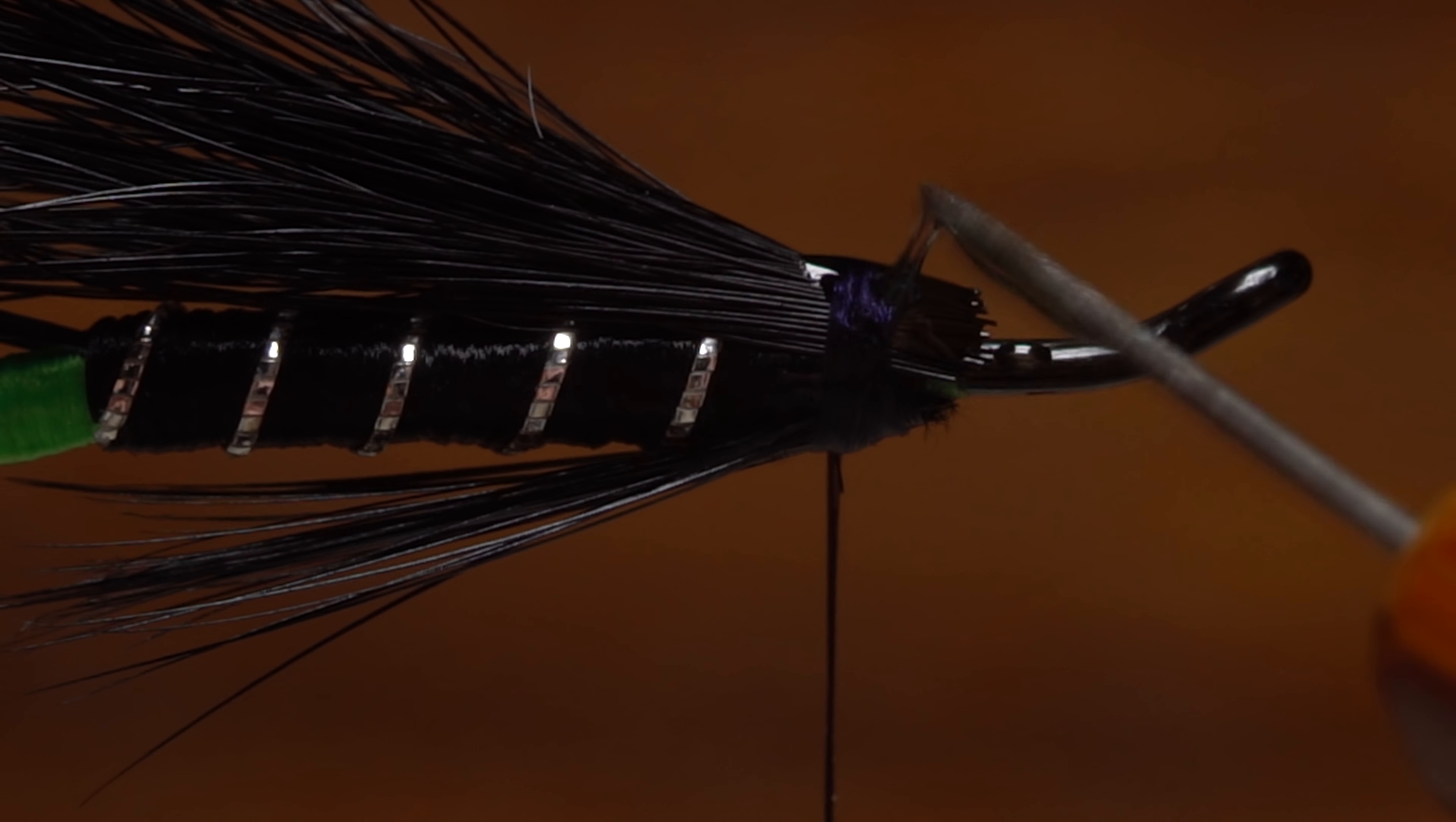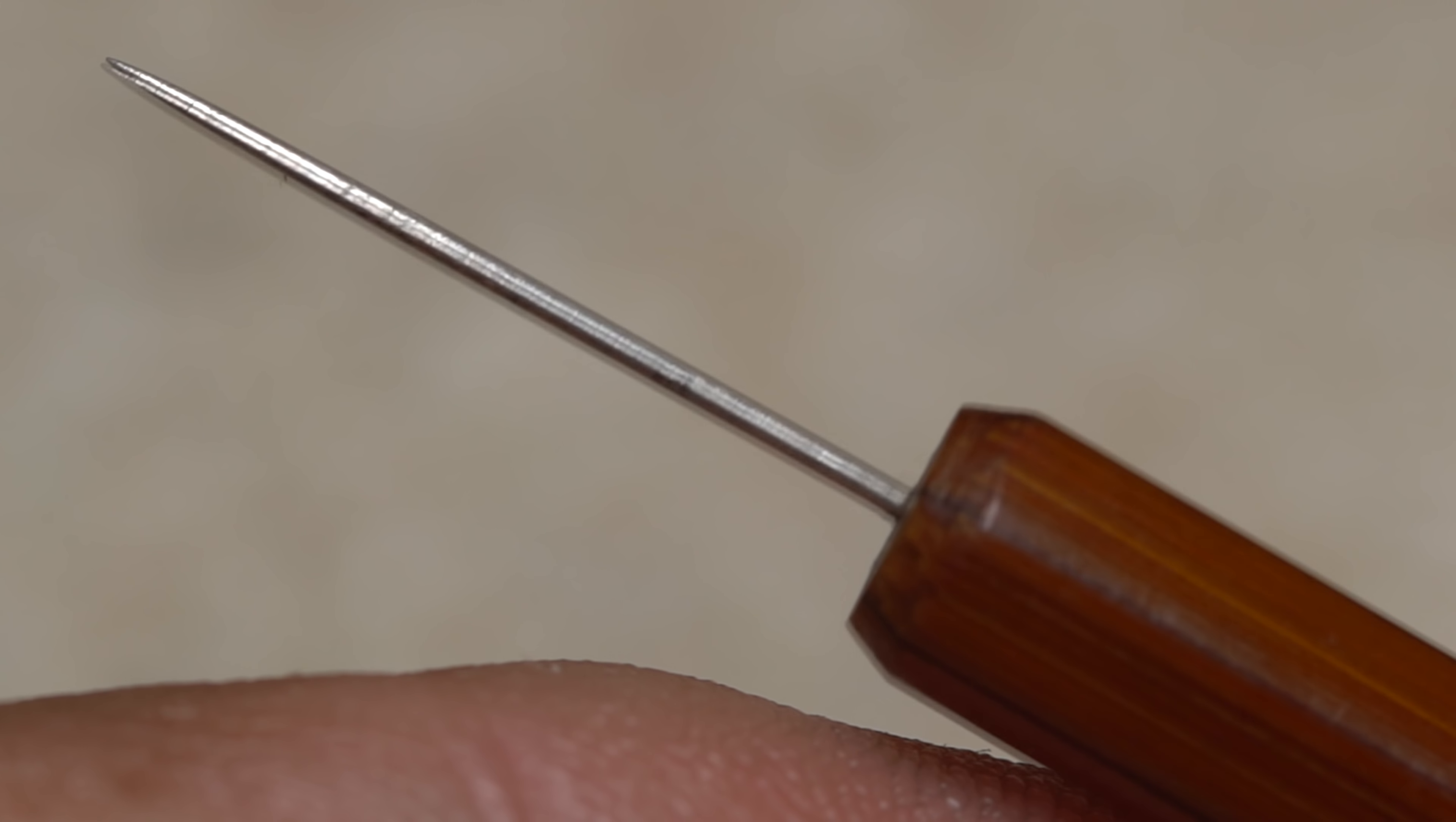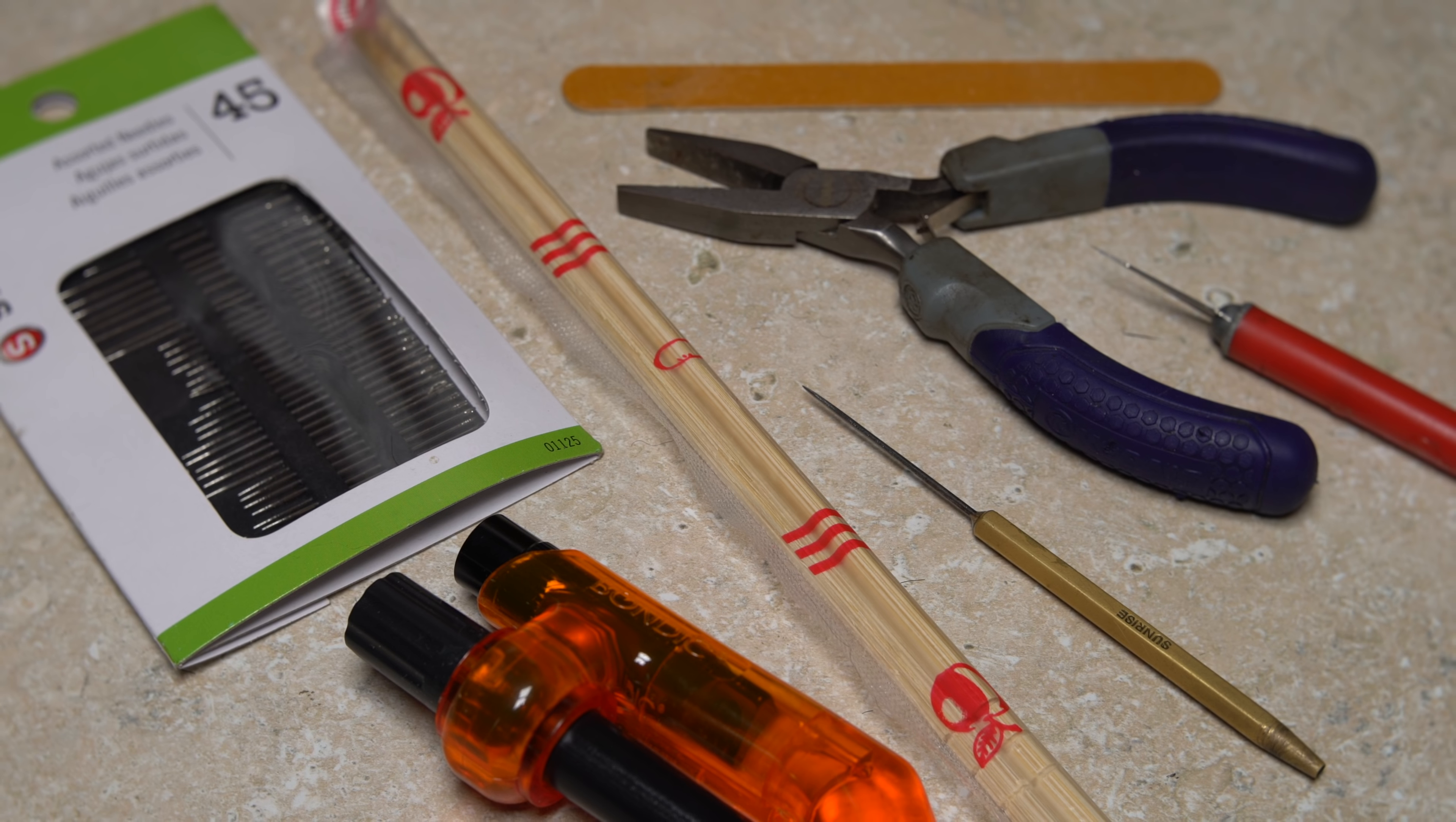The one Matt gave me is gorgeous, and its handle is actually a segment of bamboo rod blank. Making a cheap version is easy and requires just a few simple tools.